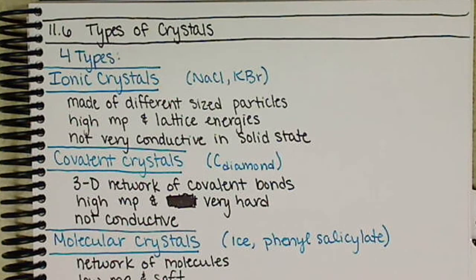Ionic crystals are not very conductive in the solid state. Now ionic crystals are conductive in the liquid, or especially when dissolved in water because they are soluble and break apart into their ions. But as a solid crystal, they are not very conductive.